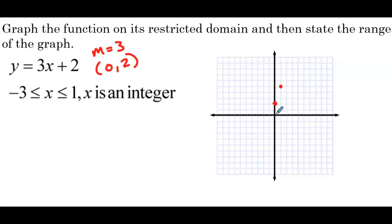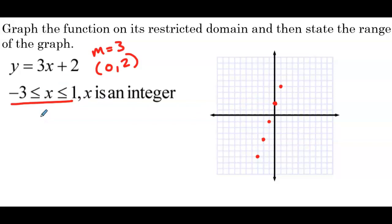Working in the other direction: down 3 to the left 1, down 3 to the left 1, down 3 to the left 1, stopping at x equals negative 3. If you plotted extra points, you could always erase the ones not in the domain — just plot as you normally would, then erase points outside the given domain restriction.